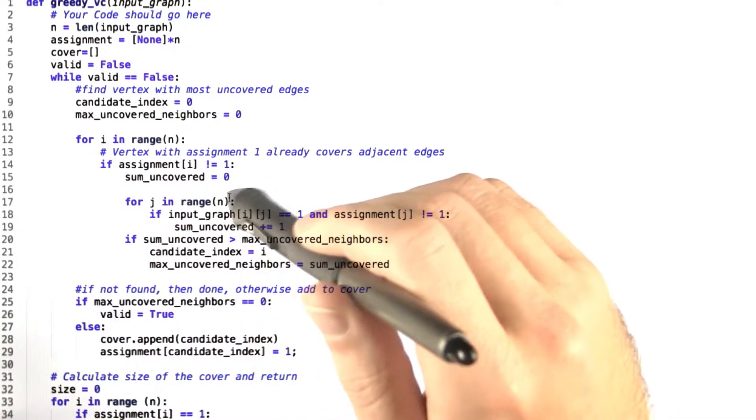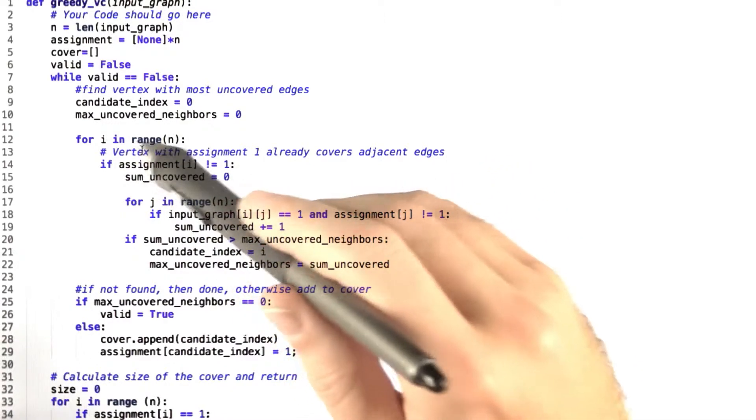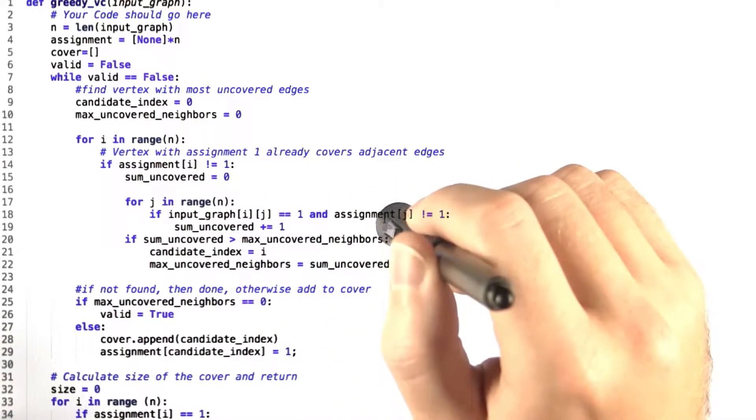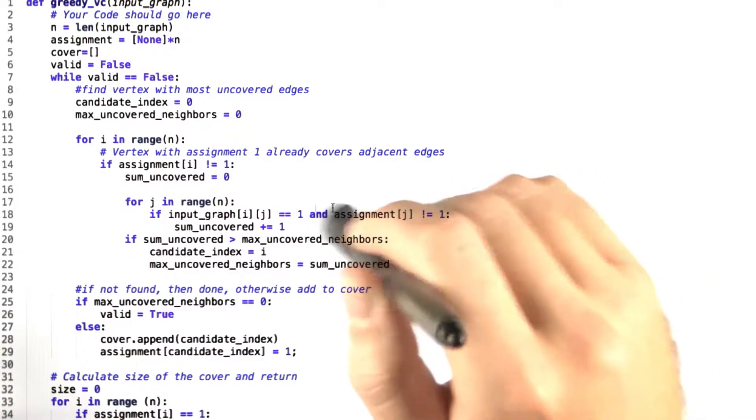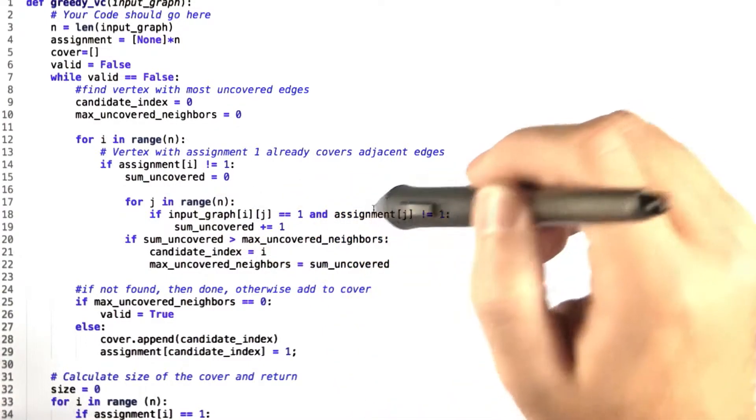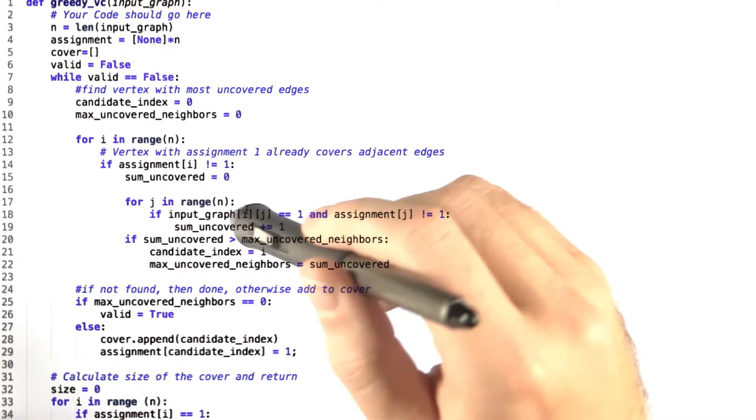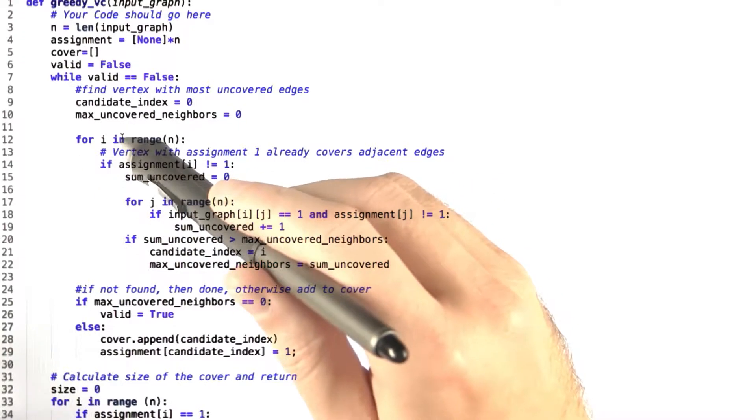And then again for every vertex in the graph, we check if there is an edge between the two vertices represented by i and j, and if j has been assigned. If it hasn't been assigned, then we increment the sum of the uncovered edges since there is now an edge that is not covered by either i or j. And we loop through all of the other vertices to check if there is an edge between i and j.